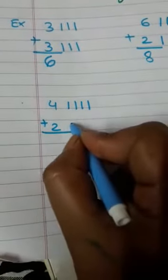4 plus 2. Draw four strokes: 1, 2, 3, 4. Plus 2: 1, 2.